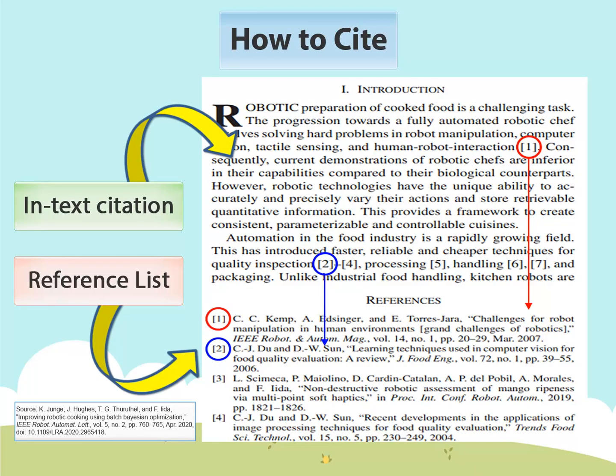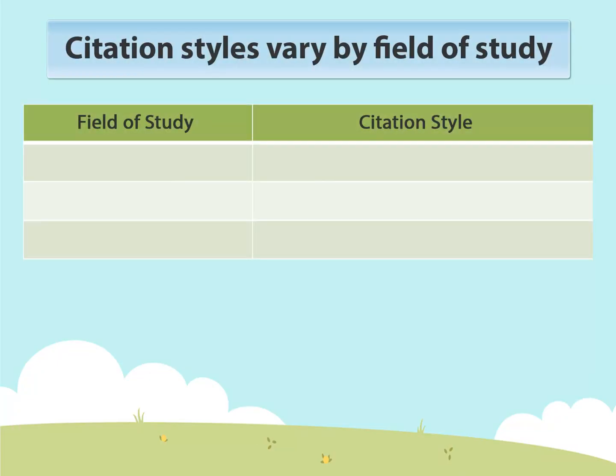As you can see, the in-text citation gives the reader a trail to find the original source in the reference list. Different subject disciplines use different citation styles.